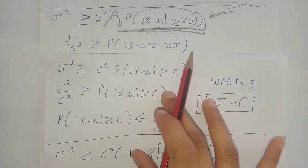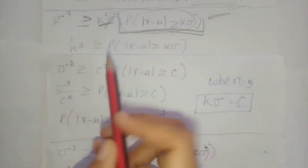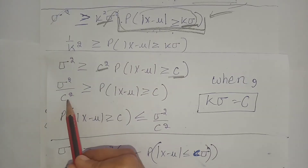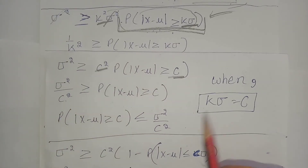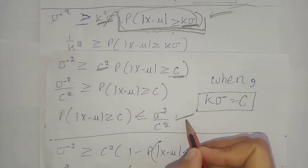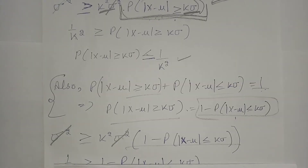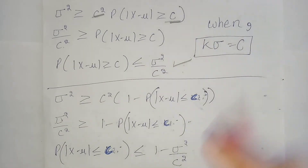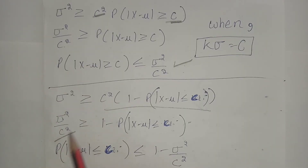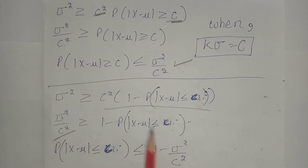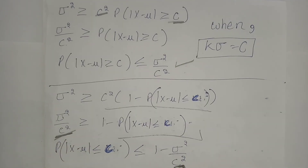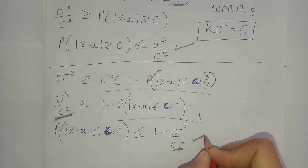Looking at the first statement in proof, you can see k sigma here and k sigma here. This gives us a statement of Chebyshev's inequality. For the second statement in proof, you can similarly see k sigma substituted throughout. As the scale adjusts, these terms reduce and we obtain both final statements of Chebyshev's inequality.